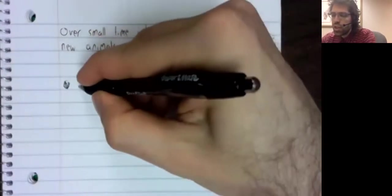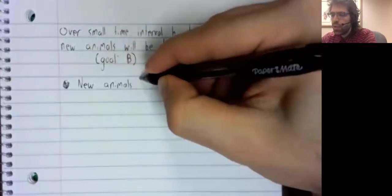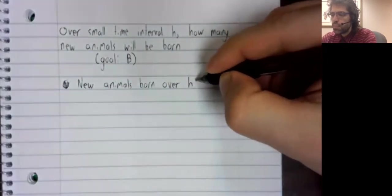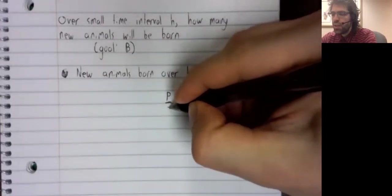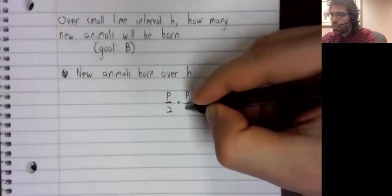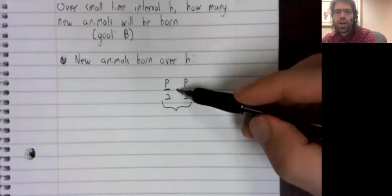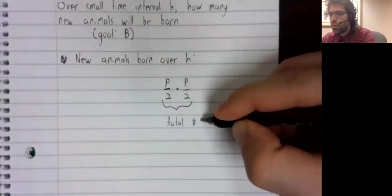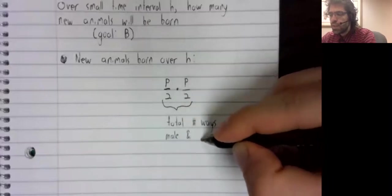So to calculate the number of new animals born over some time period h, there are p divided by two males, and there are p divided by two females. So p divided by two times p divided by two is the total number of ways a male and female could interact.